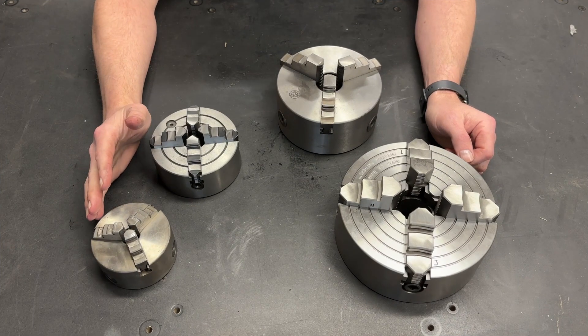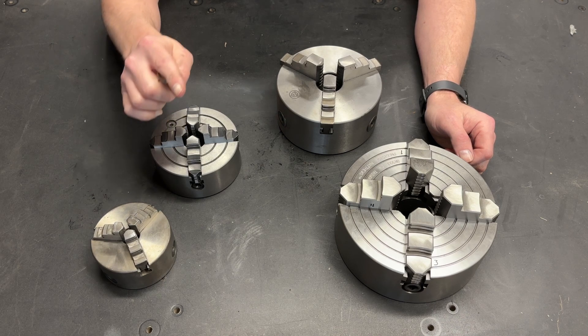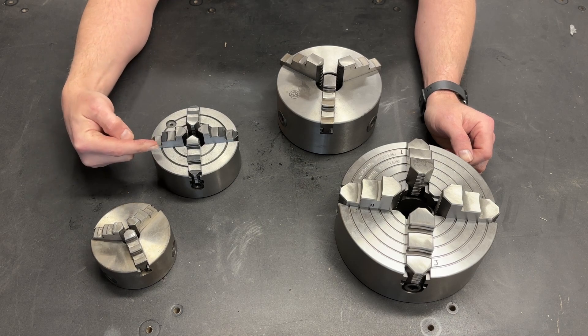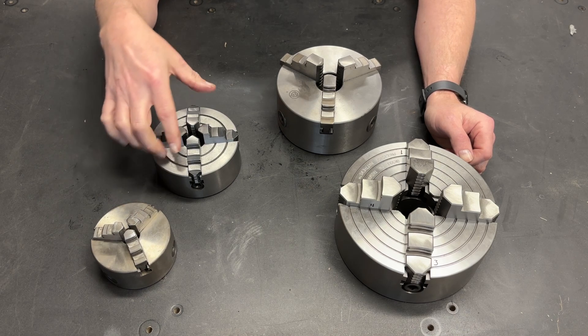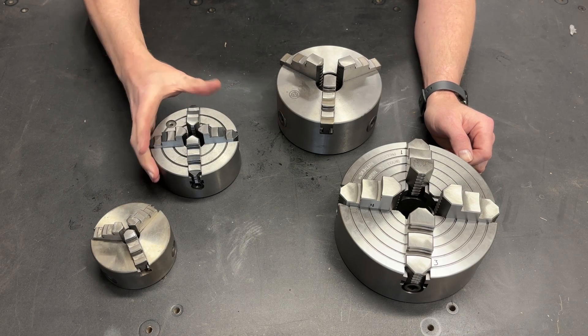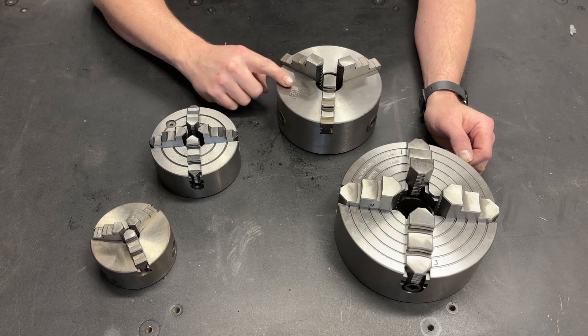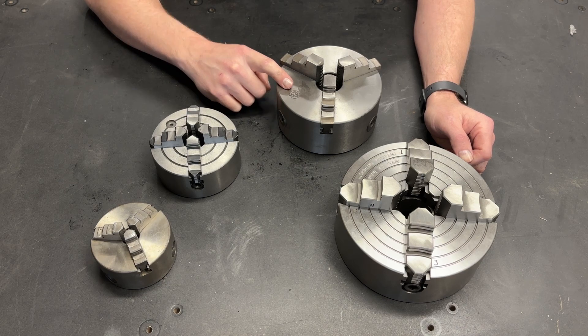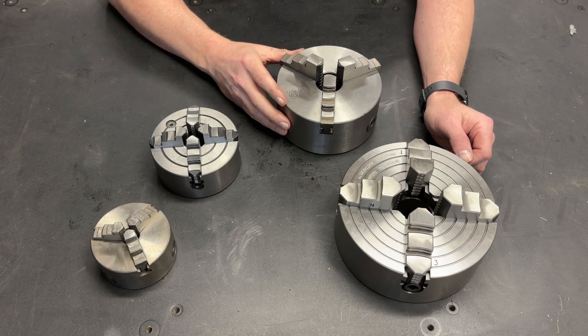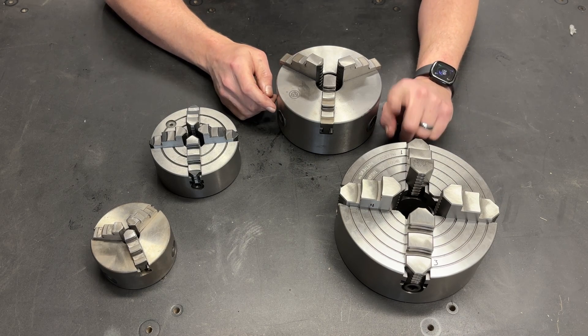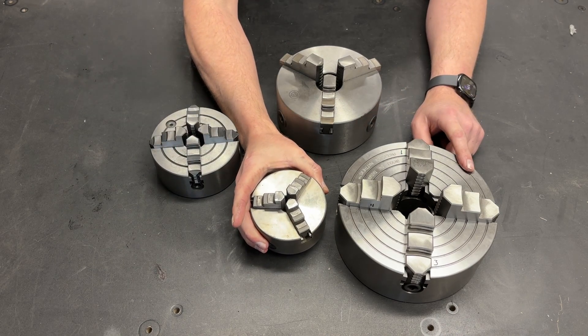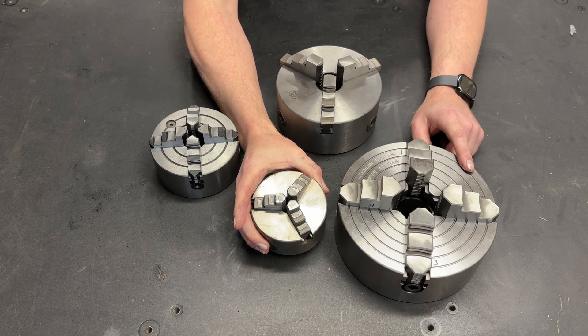So here we have four different lathe chucks, and it's amazing the difference that one inch makes. This is a four inch chuck. This is a five inch chuck. You can see that it is obviously bigger around, because four inches, five inches, but it's taller, it's heavier. Then we go to a six inch chuck. And again, we have significantly increased the size of this chuck in every dimension. Lastly, we have an eight inch chuck. And as you can see, comparing the four inch chuck to the eight inch chuck, there is a massive, massive difference.